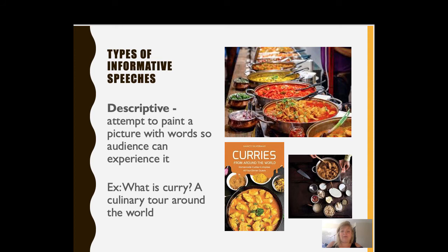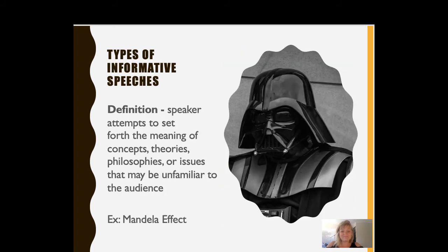According to our readings, there are a few different types of informative speeches in addition to those listed above, which were really more topics than types. Descriptive speeches are speeches where the speaker attempts to paint a picture with their words so the audience can truly experience it or come close to an experience on their own. For example, world curry — you could start by talking about what curry is, then continue point by point, detailing a culinary tour around the globe. Another type is a definition speech, where the speaker attempts to set forth meaning to a concept, theory, a philosophy, or maybe even an issue that is somewhat unfamiliar to the audience — one we've heard of before, but maybe don't have the whole picture in our mind.